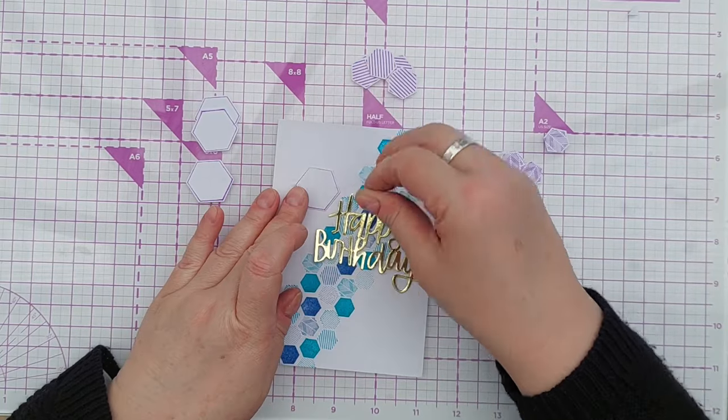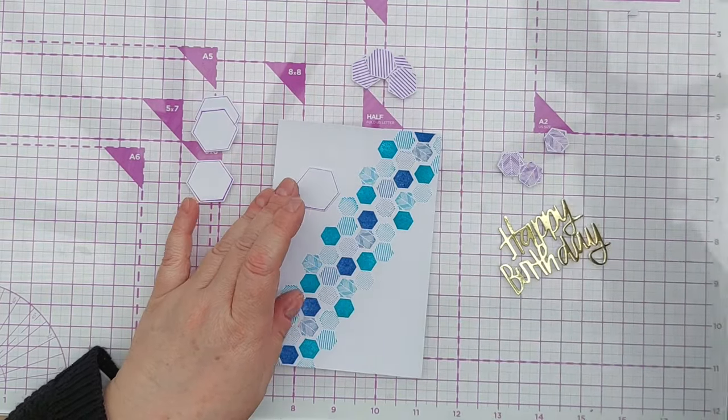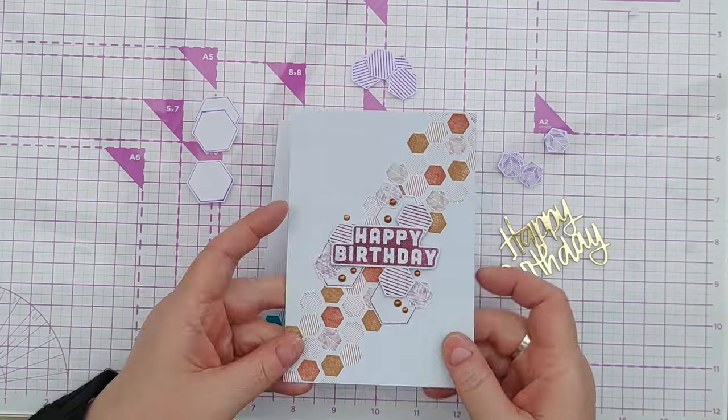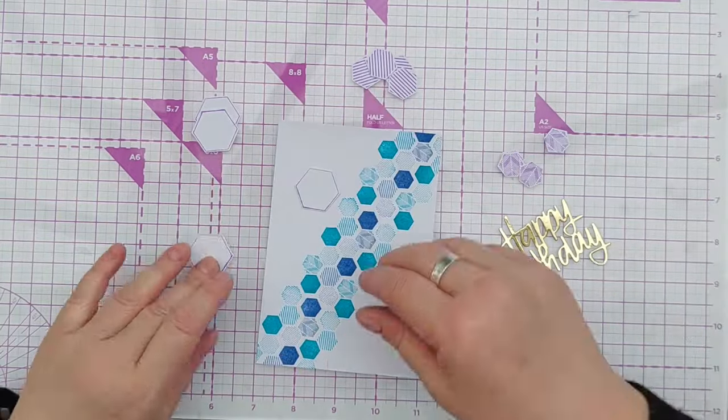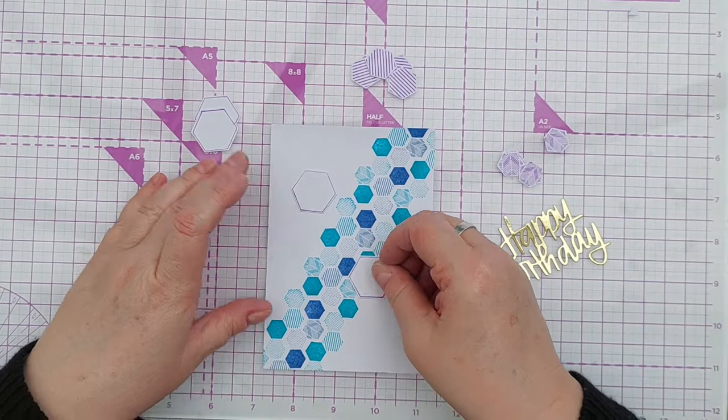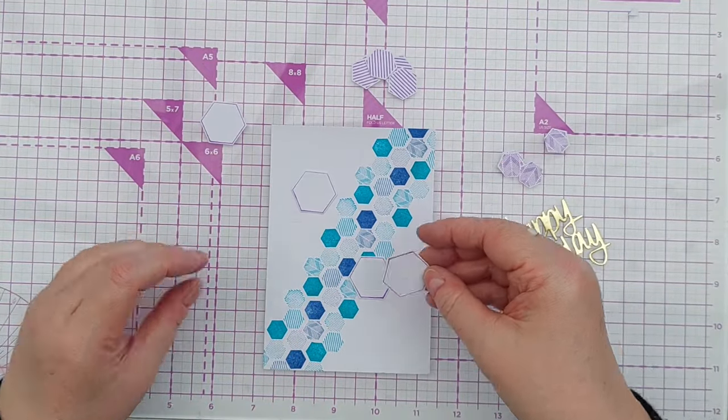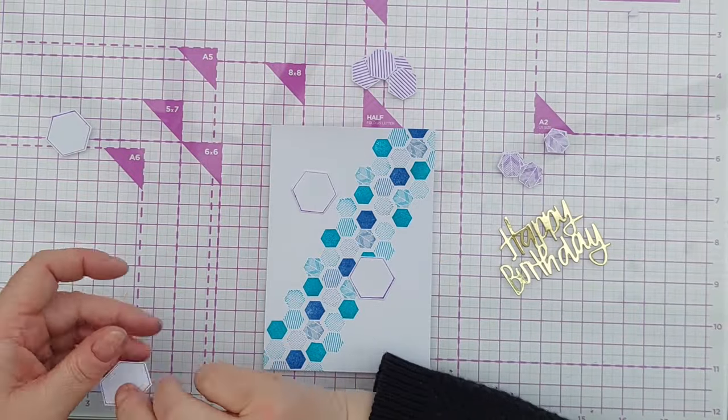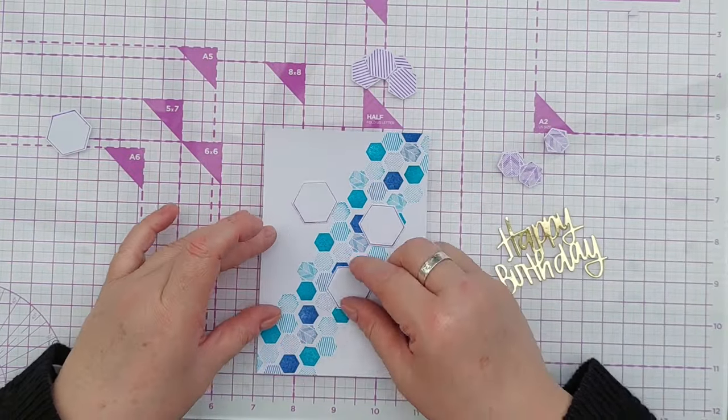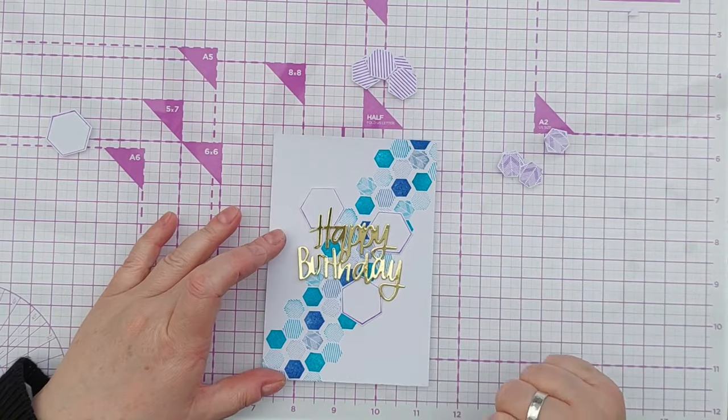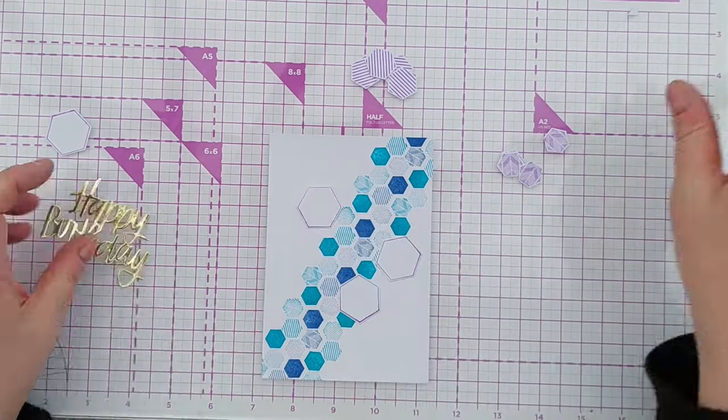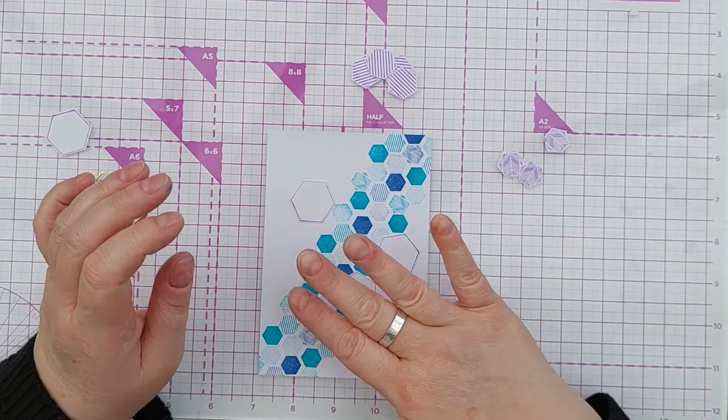And I'm thinking a bit like I did with this one having the big white open hexagons as a background to my sentiment maybe just using three of them, the three best ones. And then dotting the others around. So I'm going to put the big ones flat on the background.